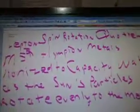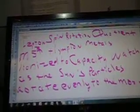See the distance. C to the power of 2. 7 to the power of 10 — that's a 10 there, not a 0. And then it's 4, 4, 7, 1. The leptin spin rotation quotient is M5 squared plus Limpian metals ionized to capacity. Watch as the sun's particles rotate evenly to the moon.